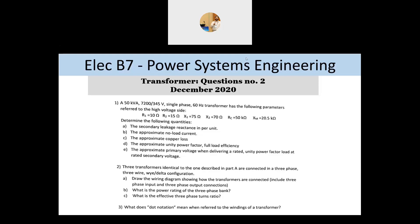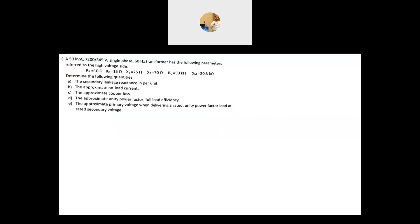Hi everyone, welcome back to this series on electrical B7 power system engineering PAO exam questions. This is a transformer question, one of the regular questions noticed in the post-COVID era. The question has three parts: analysis of a single-phase transformer, per-unit representation, three-phase transformer connections and ratios, and the dot notation for transformer windings.